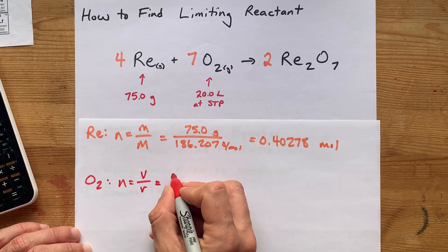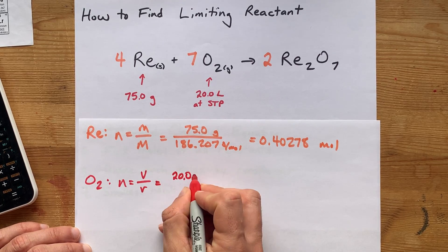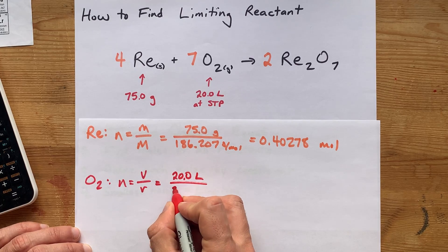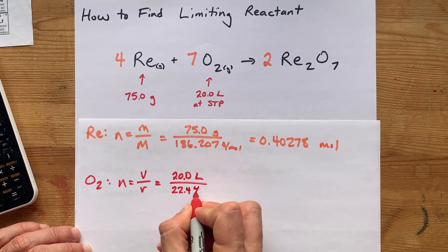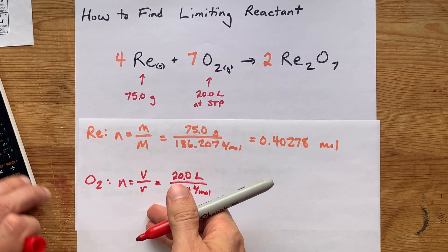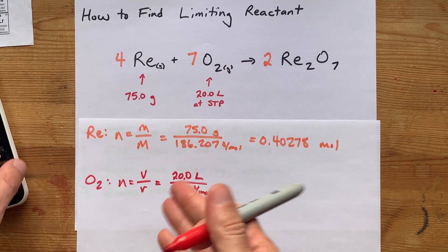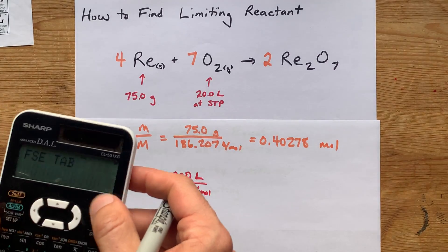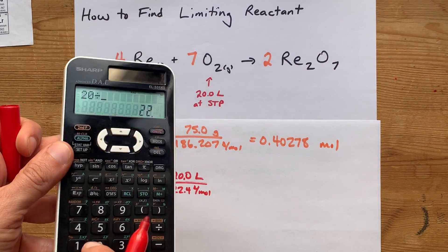In our case, we have 20 liters, and we're going to divide that by 22.4 liters per mole. If you don't know what molar volume is, you could always use PV equals nRT. 20 divided by 22.4.